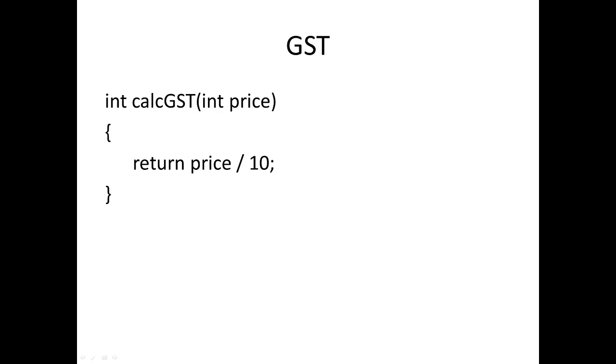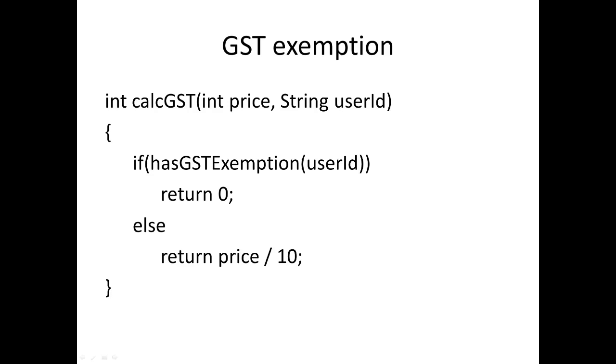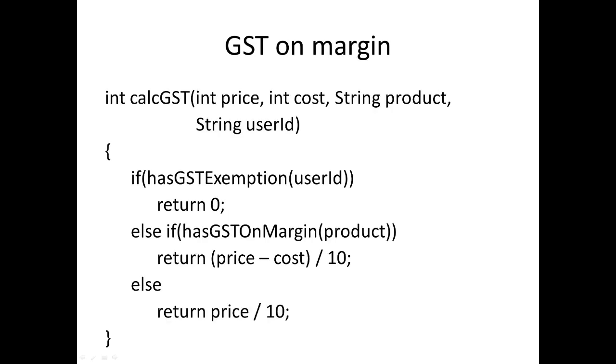Then things can change. Turns out that some users of this—this is on a web service here—some users of this were actually exempt from GST. So we needed to be able to look at the user's user ID, look them up and see if they're exempt. And if they're exempt then GST is just going to get returned to zero. If the user is not exempt then it's just calculated in the normal way.